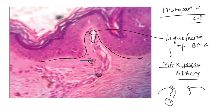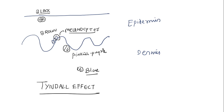And as discussed over here, you will understand that since they are falling into the dermis from the Max-Joseph spaces, the color which is emitted under Tyndall effect is going to be purple pink in color. And this explains why lichen planus has purple color.